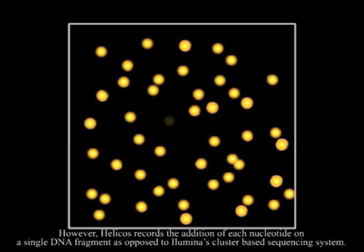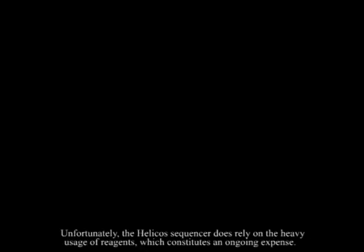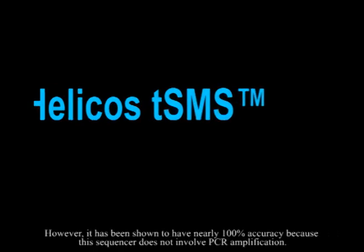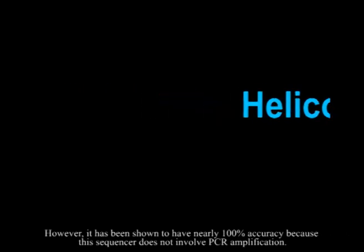As opposed to Illumina's cluster-based sequencing system, this allows for billions of unique fragments to be independently sequenced at the same time. Unfortunately, the Helicos sequencer does rely on the heavy use of reagents, which constitutes an ongoing expense. However, it has been shown to have nearly 100 percent accuracy because the sequencer does not involve PCR amplification.